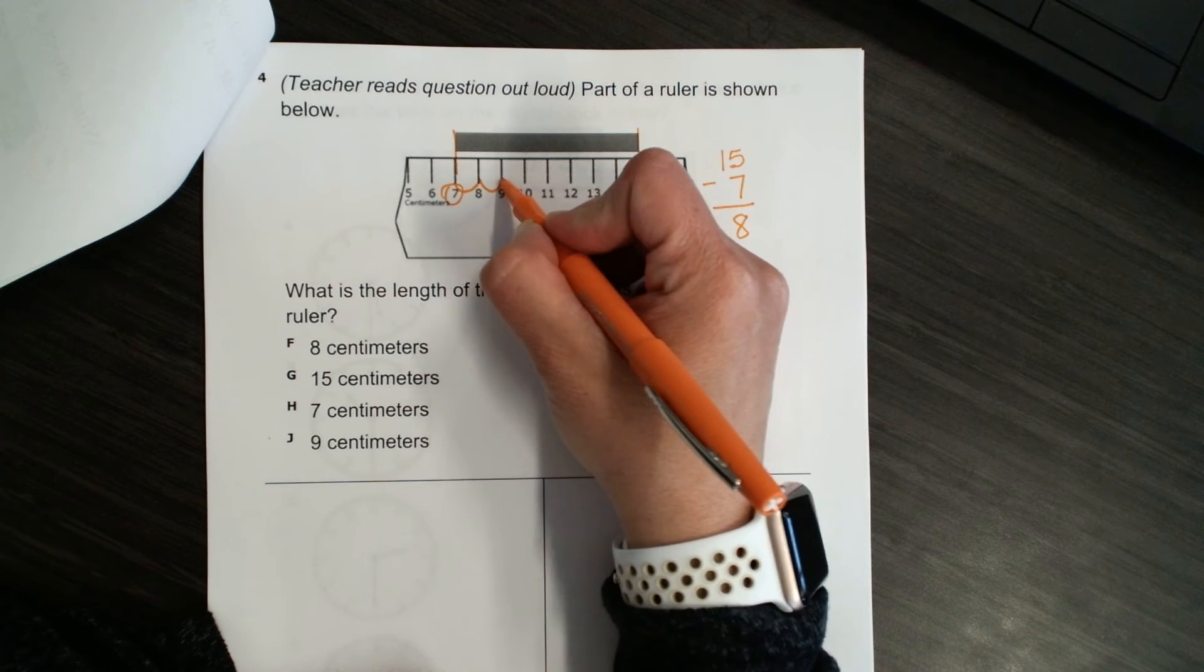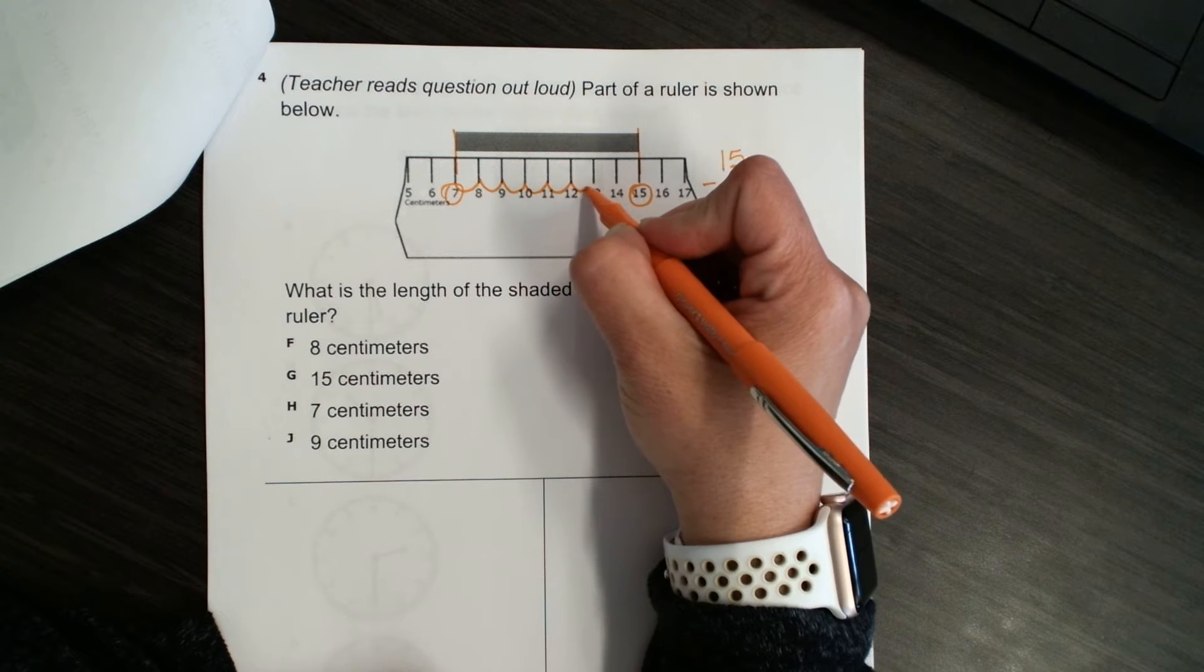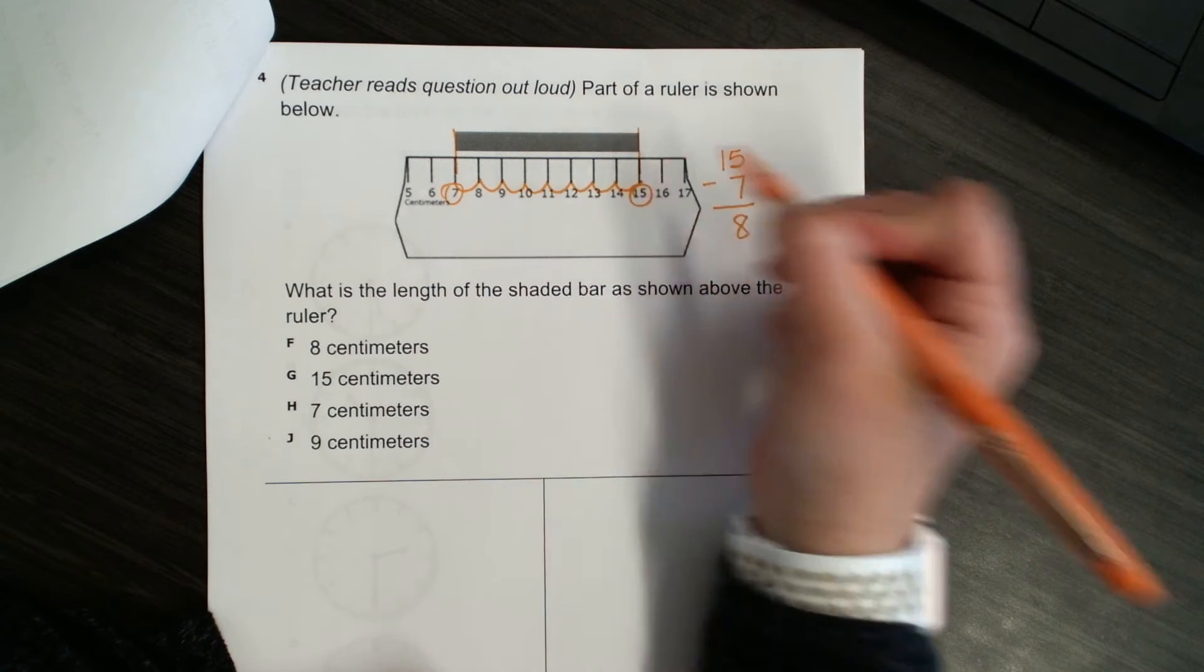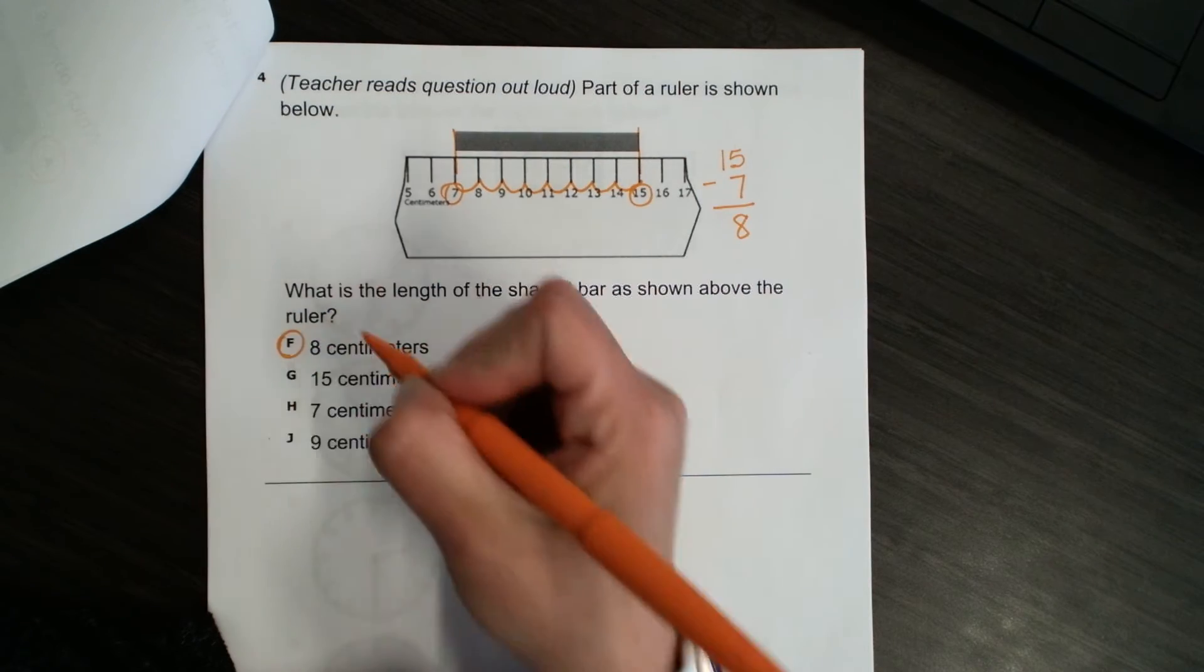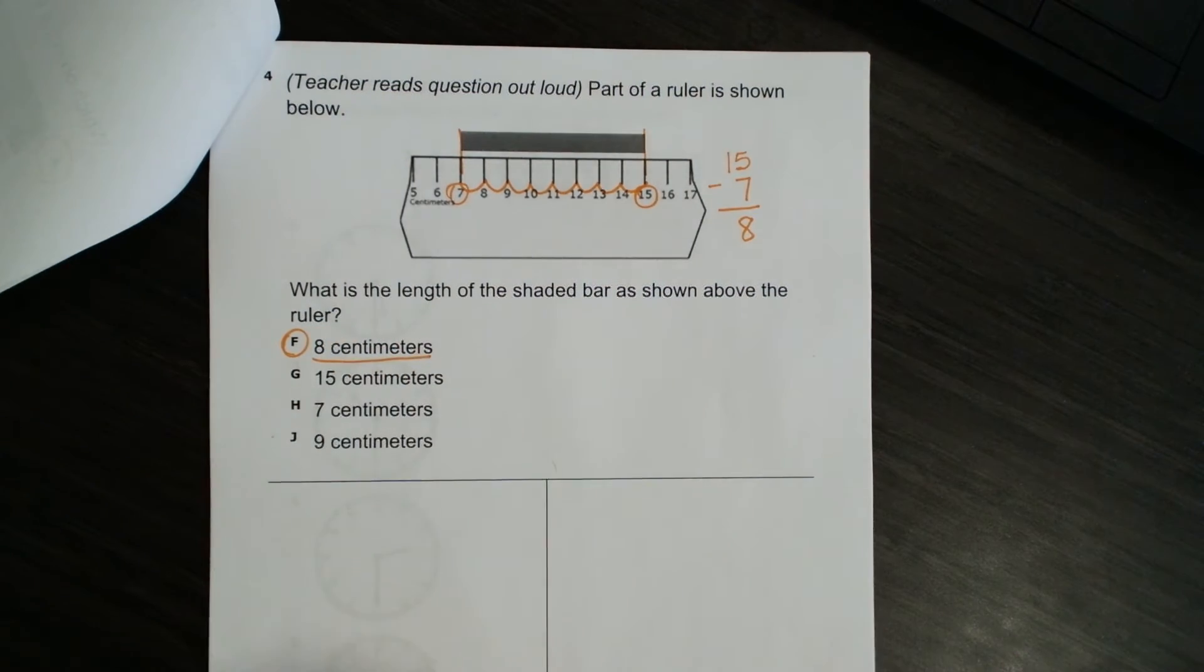1, 2, 3, 4, 5, 6, 7, 8. So, 8 centimeters is how long this shaded bar is. So, I would choose 8 centimeters.